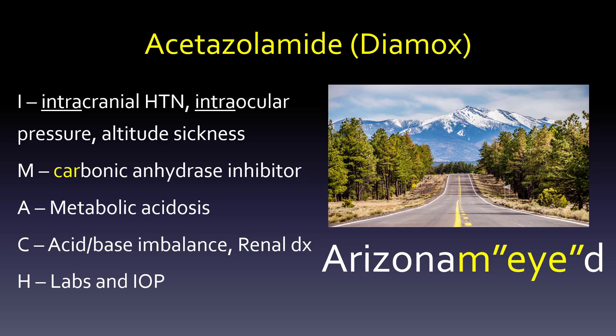Let's move first to acetazolamide (Diamox). It's indicated for intracranial hypertension, intraocular pressure — hopefully those two 'intra' words help you remember it — and altitude sickness. I think of 'Arizona-mide' instead of acetazolamide, pictured with Humphreys Peak, the tallest mountain in Arizona, where you'd get altitude sickness. The spelling is changed to M-E-Y-E-D to remind you of intraocular pressure and the mountain.